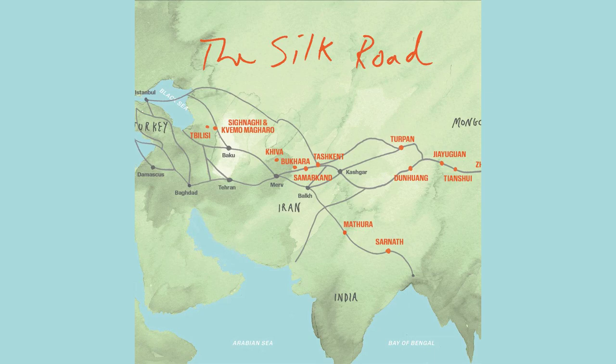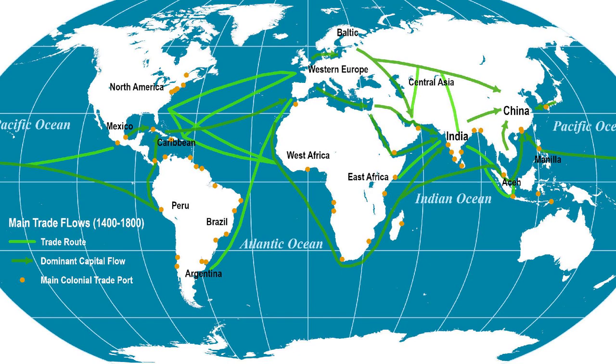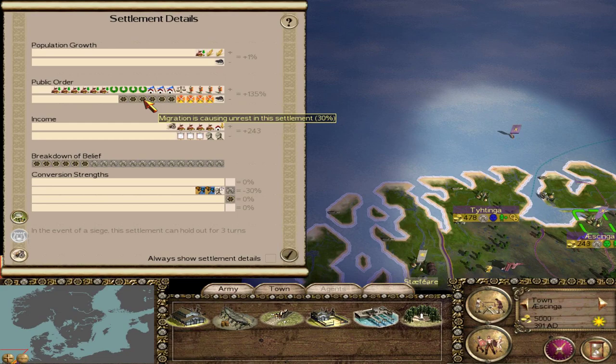One of the most famous examples of cultural exchange through migration is the Silk Road. This network of trade routes connected the East and West, facilitating the exchange of goods, ideas, and religions between Asia, Europe, and Africa.